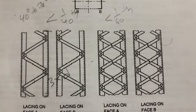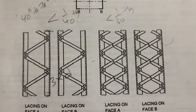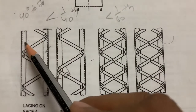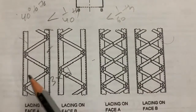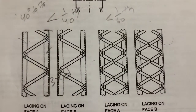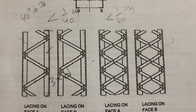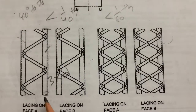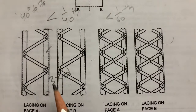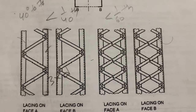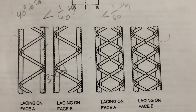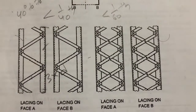The distance between the two main members — this is one main member and this is the other — should be kept such that the radius of gyration about the YY axis (r_yy) is greater than the radius of gyration about the ZZ axis (r_zz). That is the condition we need to satisfy.